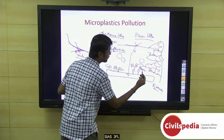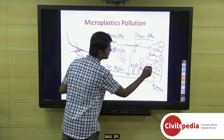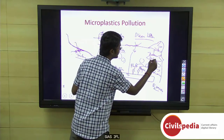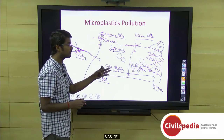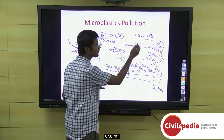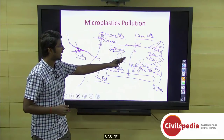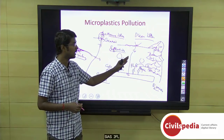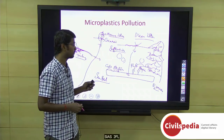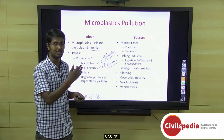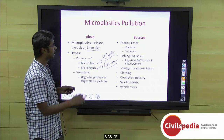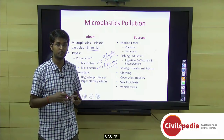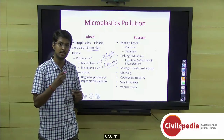Bioaccumulation works as follows: say sardines contain 1 gram of microplastic; a tuna consuming 10–20 sardines accumulates around 20 grams; a whale consuming many tunas can accumulate over 100 grams. When tuna or sardines are consumed by humans, the human unknowingly ingests microplastics which can affect human cells. Microplastics pollution is a very large menace for the entire world, but it is also the least studied menace.